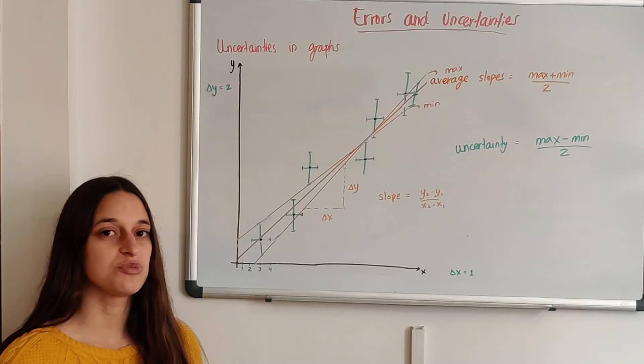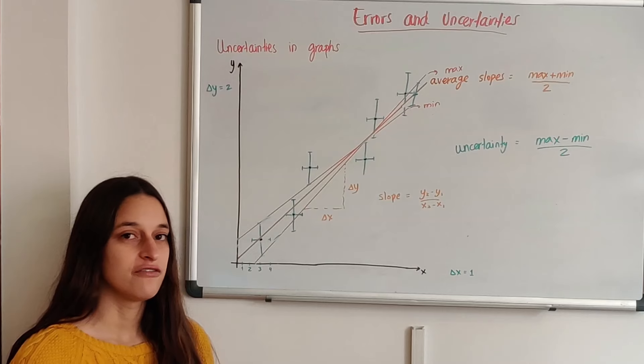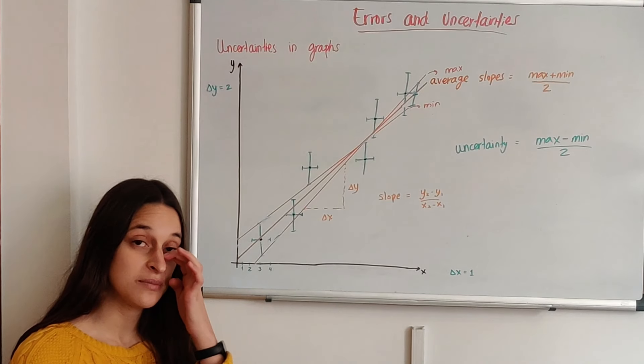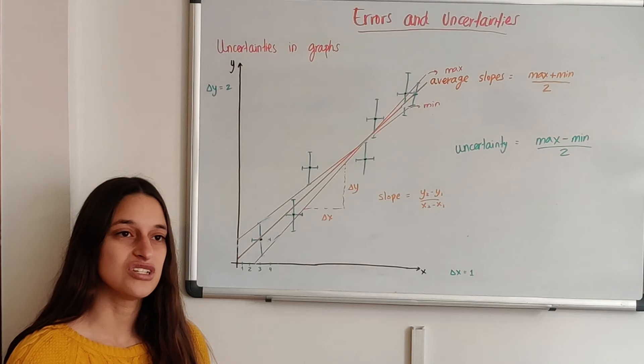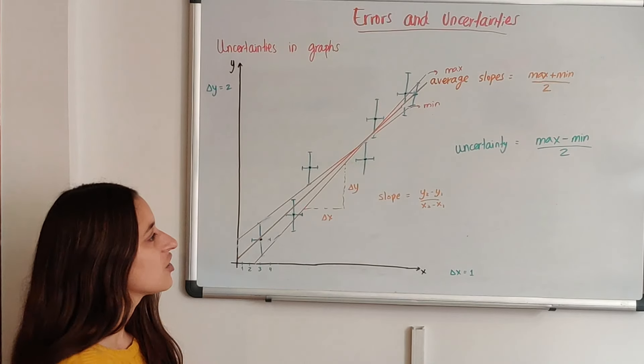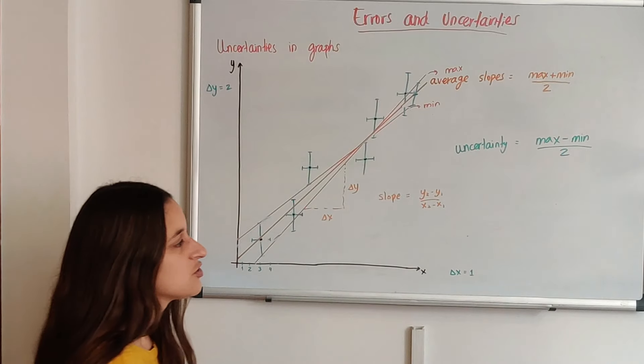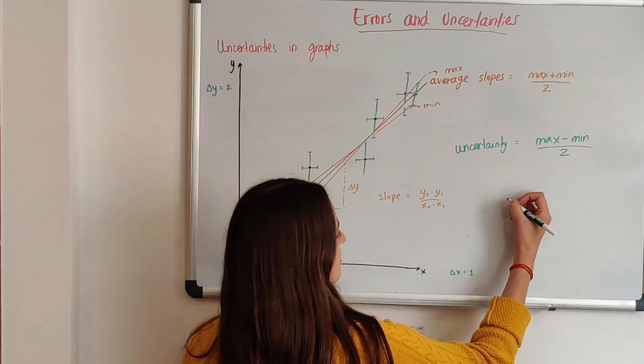So when you take multiple trials, you will have very big values and very small values for the same measurement that you want to make. And the uncertainty is calculated basically like this.